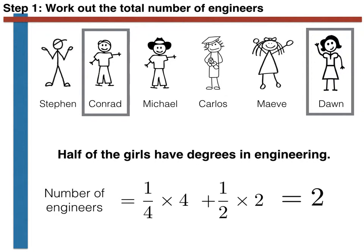We thus have a total of two engineers. The picture now makes the answer to the question obvious. We have two engineers in total, Conrad and Dawn, and one of them is a girl, so our conditional probability is a half.